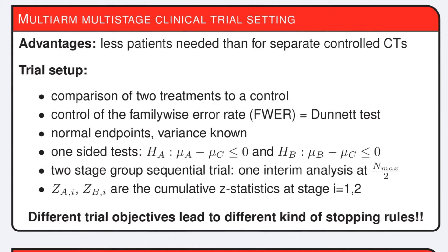Let's consider a simple example: the comparison of two treatments to a common control. The endpoint is normally distributed with known variance and one-sided tests are performed. We consider group sequential trials with two stages, where in an interim analysis, treatment arms may be stopped for efficacy or futility.